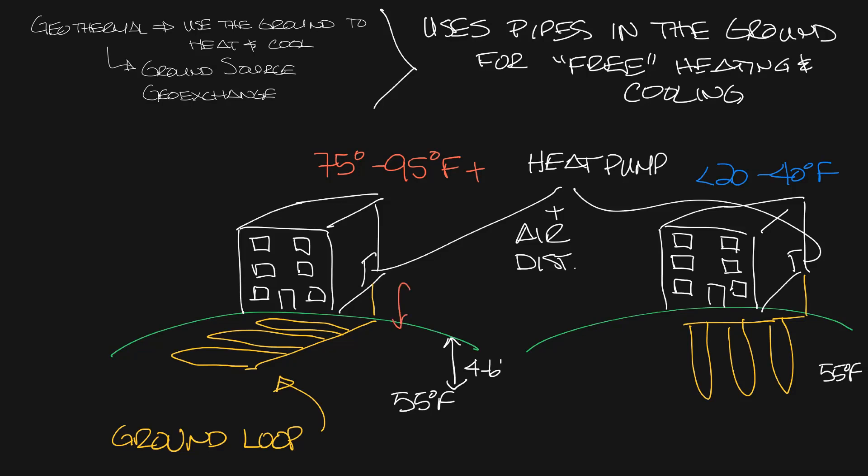In the summer, the water temperature above ground may be 75 degrees or warmer depending on the outside temperature, but when it circulates through the ground it cools to 55 degrees as it comes back into the heat pump.